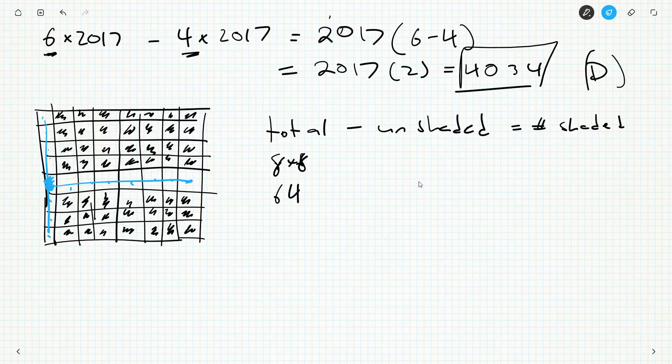However we do it, it's 64 minus 15. So the shaded ones are going to be 64 minus 10 is 54, minus 5 is 49. So that's one way to do it.